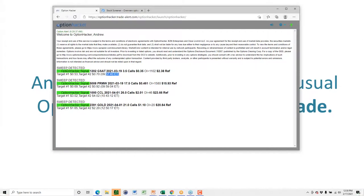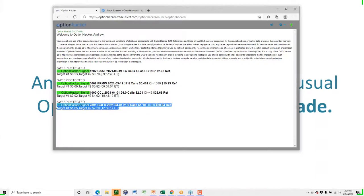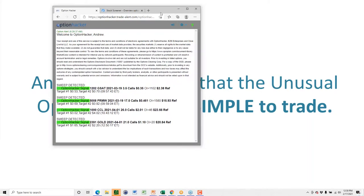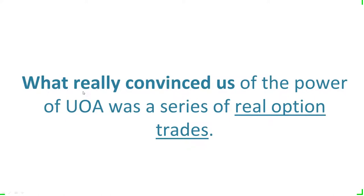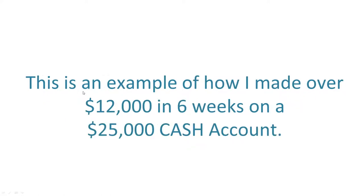Four signals today: GSAT went from 35 to 55; PRMW went from 46 to 70; CCL is unchanged; and GOLD you can still get into at $1.10. Does every trade make money? No — there are going to be trades that lose money. But there's a reason we're sold out right now on the website. What really convinces me of the power of real-time trades is an example of how I made $12,000 in six weeks on a $25,000 cash account.